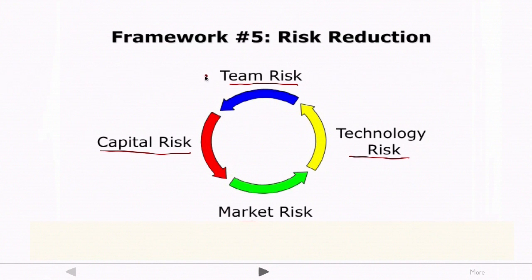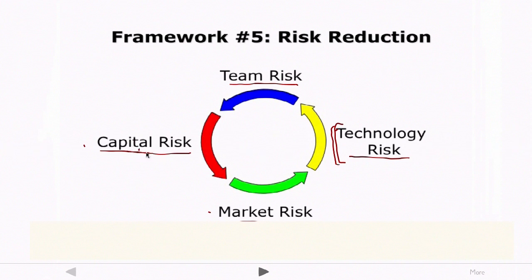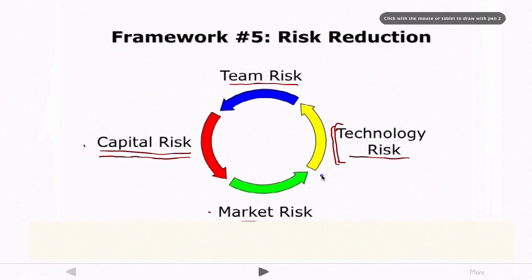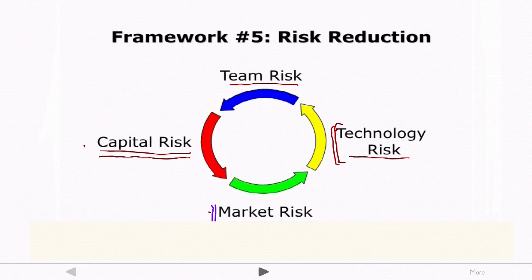Each venture is going to have different levels of each type of risk. If you're doing a biotech or a clean energy company, it's going to have a lot of technology risk — will the technology actually produce this amount of energy at this cost? These types of ventures might also have more capital risk — can we raise the money needed for this level of R&D? On the other hand, a mobile application or web startup might have more market risk — are people actually going to come to this website and do they have the need for it? But the technology risk might be lower — we can program the website relatively easily — and capital risk might be lower too because you may not need as much money to get started.